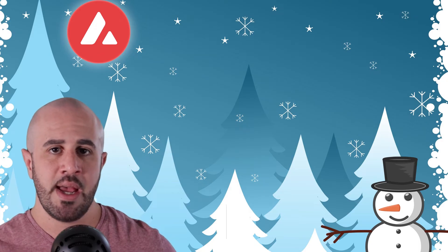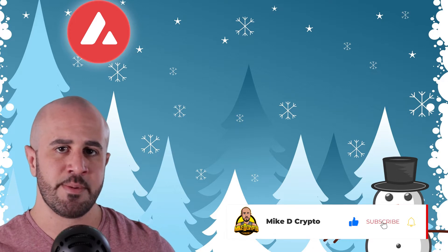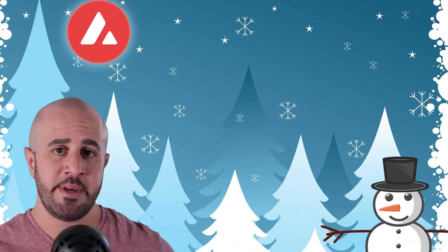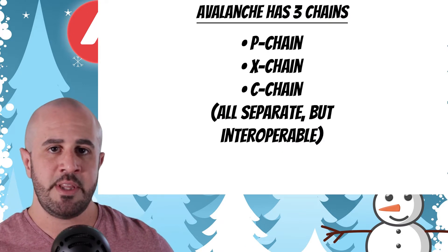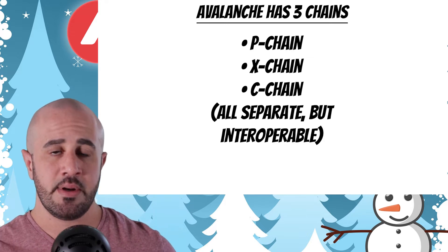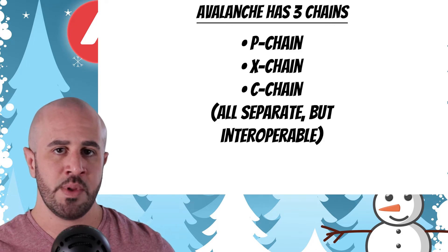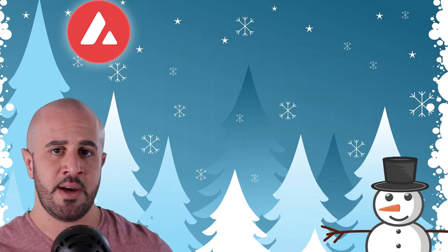You might be wondering how one blockchain can have two different consensus protocols — that doesn't make any sense. Well, that's because Avalanche has three different blockchains that are part of its system: the P chain, the X chain, and the C chain. These three chains are completely separated from one another but they are interoperable with one another.